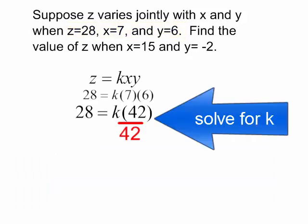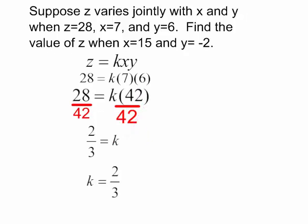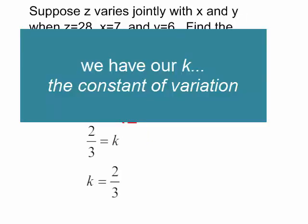In order to solve for k, I will divide both sides by 42. I can reduce this, and I will get 2-3rds equals k. I have my constant of variation.